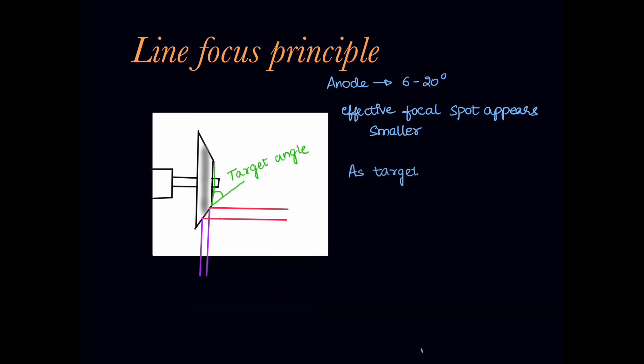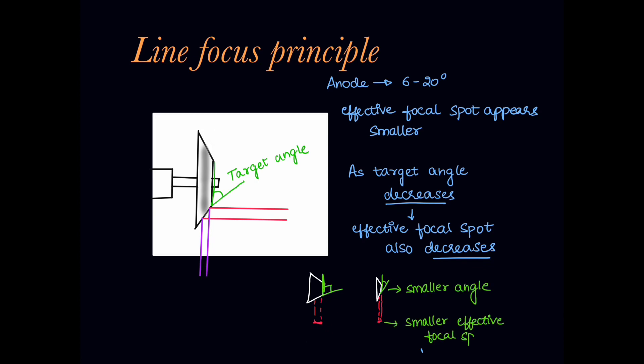As the target angle decreases from 20 degrees to 6 degrees, the effective focal spot size also decreases. Here we can see the smaller the angle, smaller the effective focal spot.